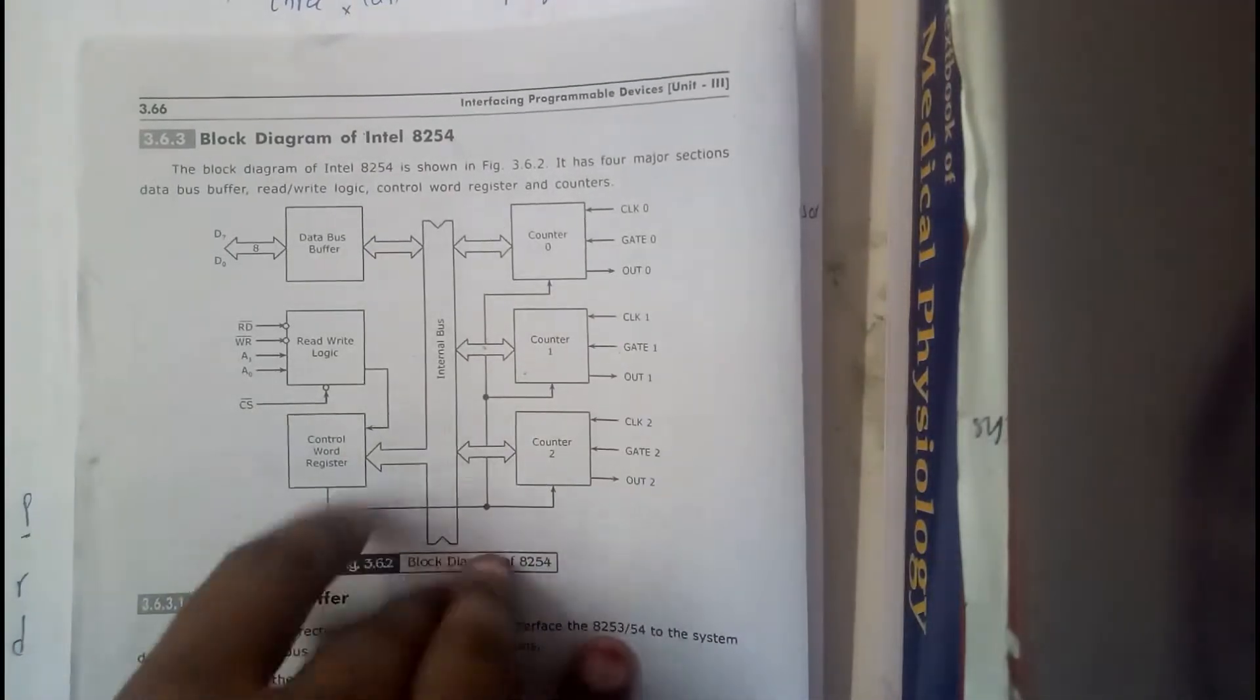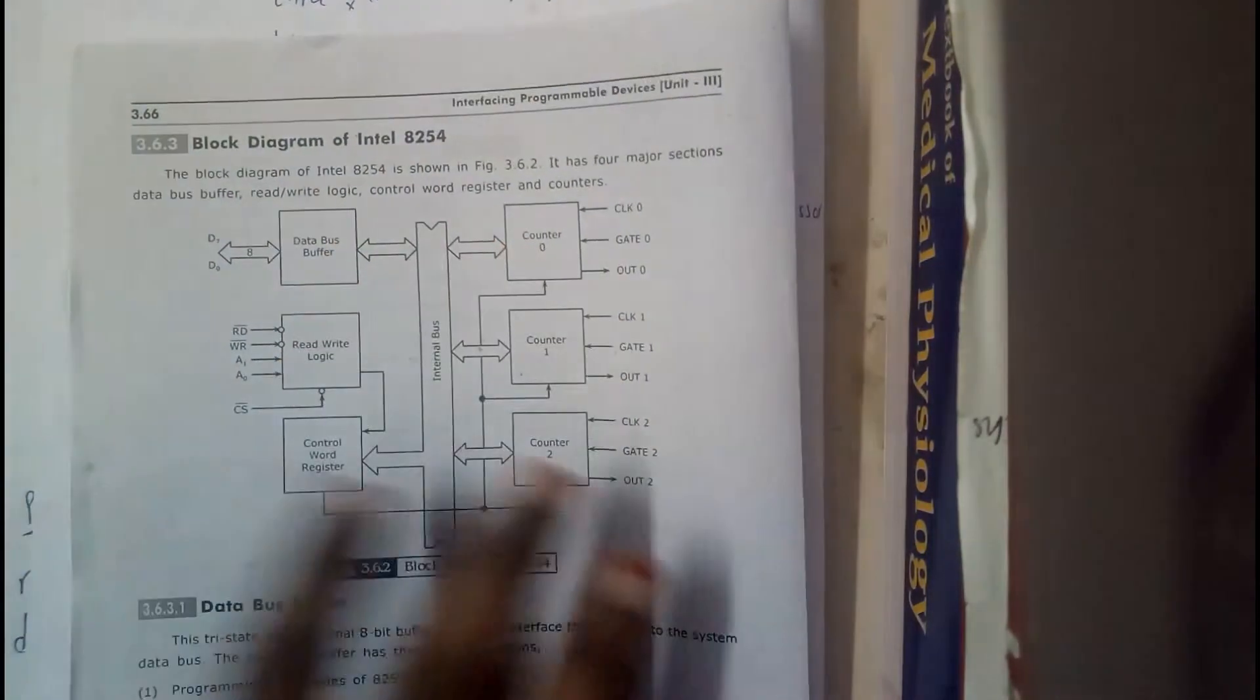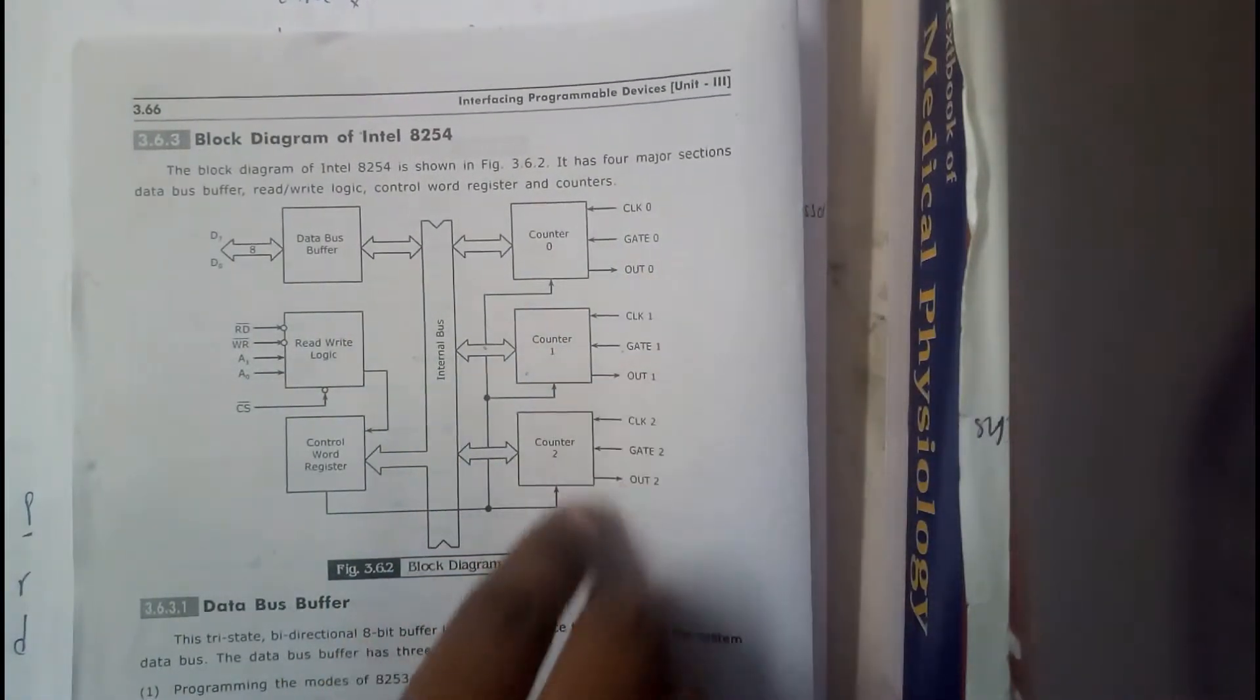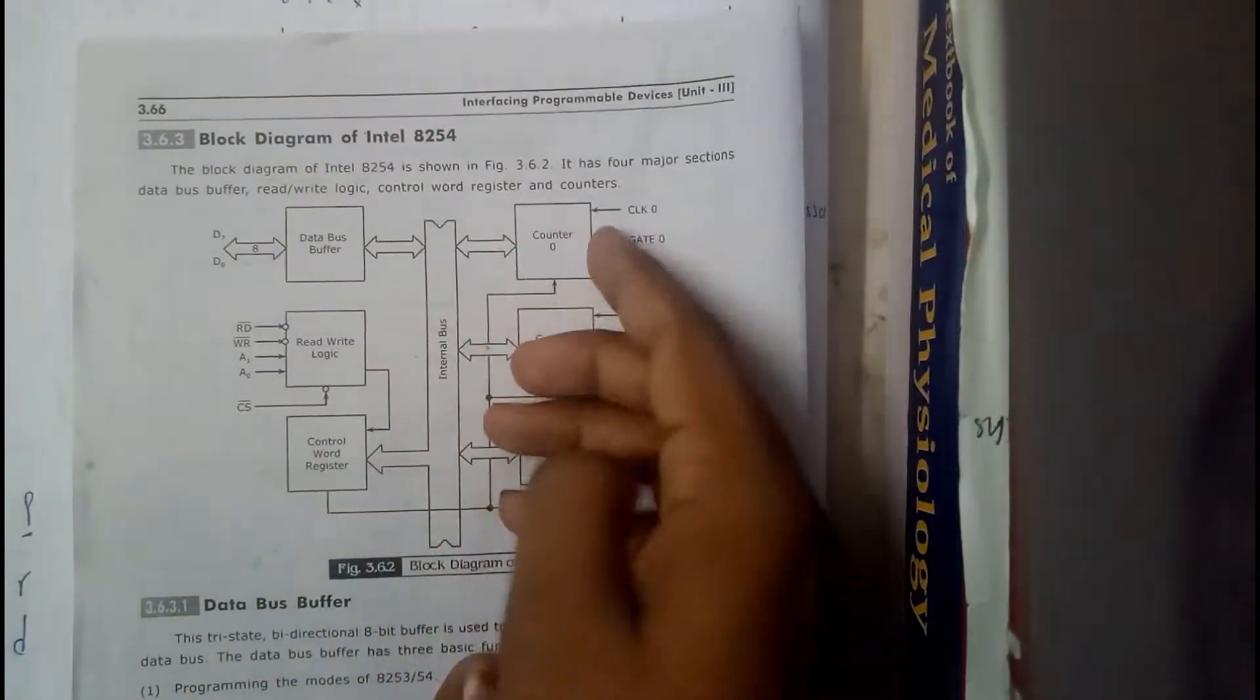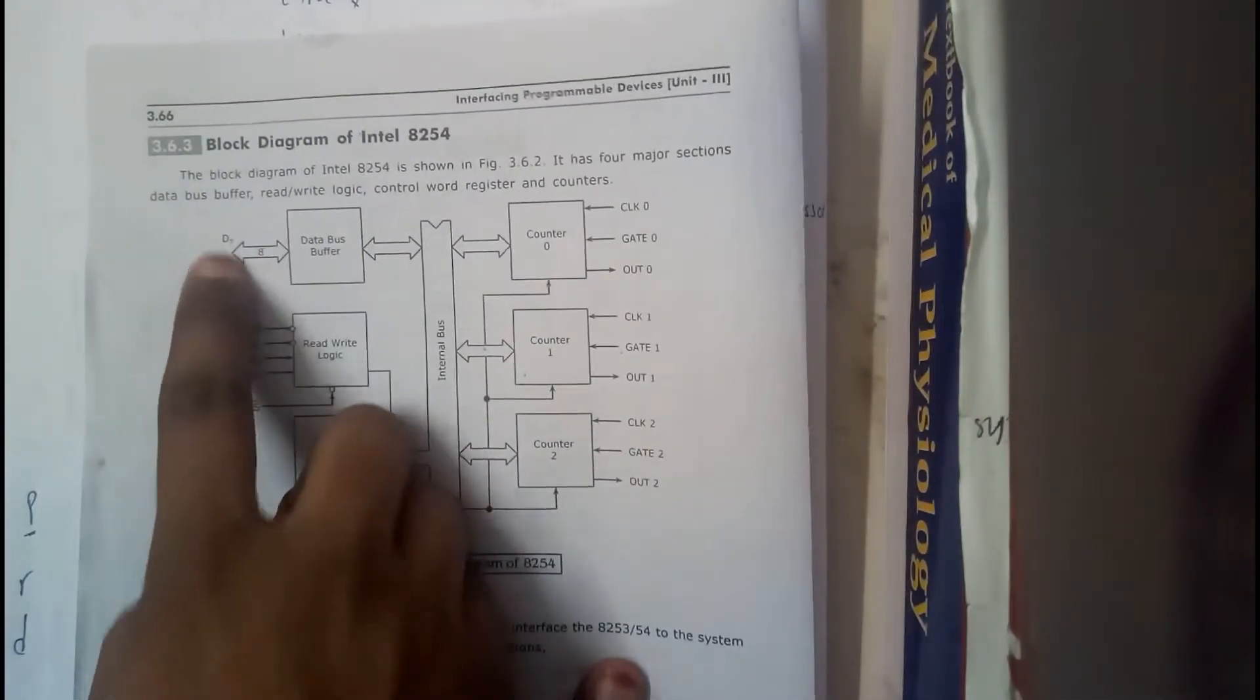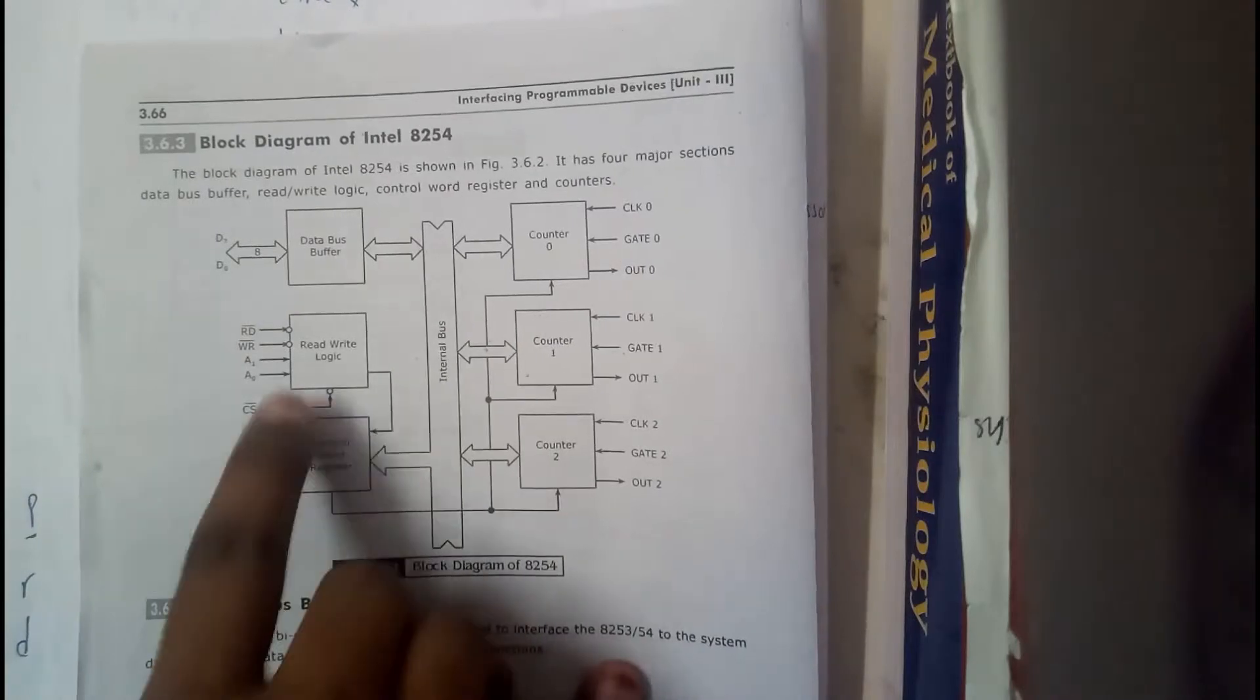Ok, hello guys, let us continue. So this is almost similar to 8253. So we will be having the counter 0, counter 1, counter 2. Clock gate out, clock gate out, clock gate out. So these 3 are connected to an internal bus where the internal bus is connected to data bus.